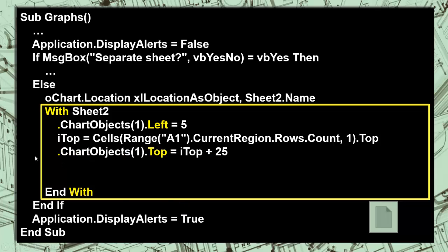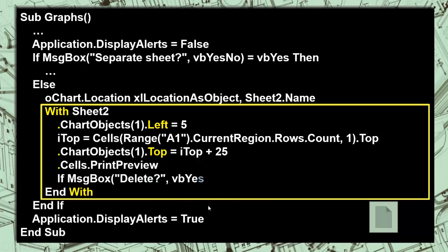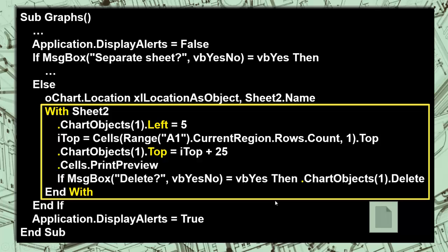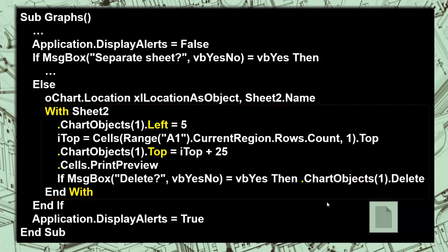We do a print preview and ask the user: do you want to delete this one? If they say yes, then we delete the chart object. Let's test the code.